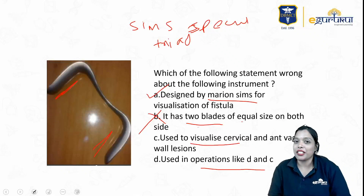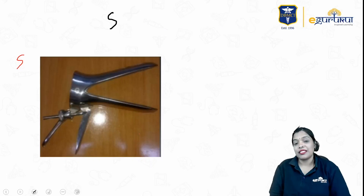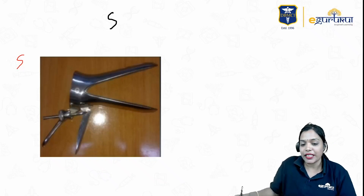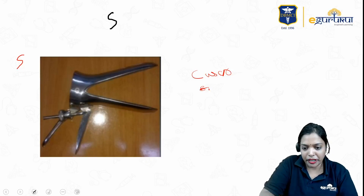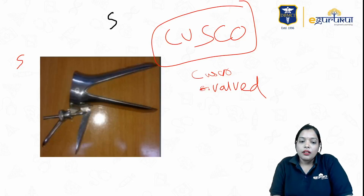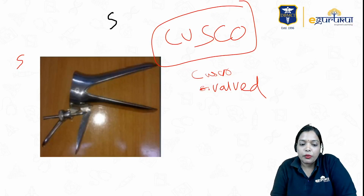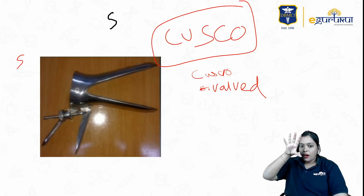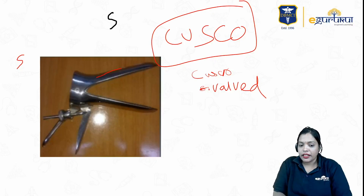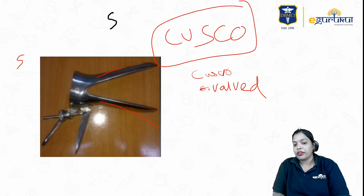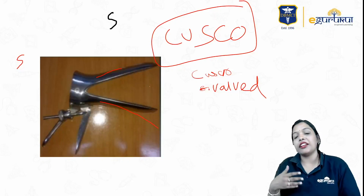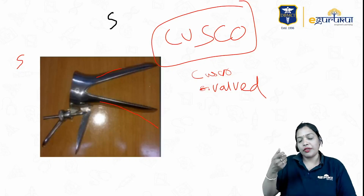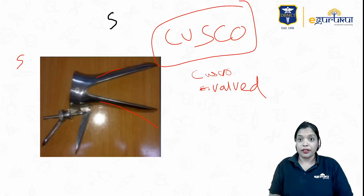Another speculum commonly used in gynecological procedures is the Cusco's self-retaining bivalve speculum. It is a self-retaining speculum — you have a knob that you can tighten. Both blades retract the anterior and posterior vaginal wall, allowing you to visualize the cervix, take a biopsy, insert a copper T, or take a Pap smear. You don't require anyone to hold it; just fix the screw.